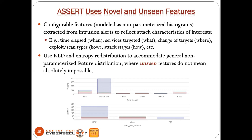Furthermore, there may be cases where a particular feature value hasn't been seen at time T yet, but we don't want to rule it out. If we want to categorize a group of alerts that hasn't shown a particular feature value, it doesn't mean it will never happen at time T+1. We use entropy redistribution to accommodate classifying a collection of alerts into a model even when the model says there's zero probability — allowing corrections as we go.